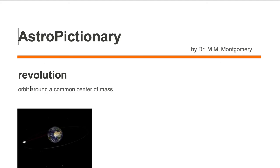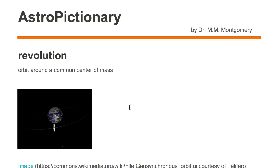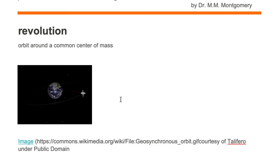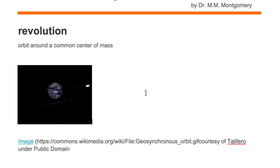Revolution is an orbit around a common center of mass. Here we're looking at a satellite which is in a geosynchronous orbit. You can see that this satellite is orbiting around the Earth. The center of mass of this geosynchronous satellite and the Earth system is in the center of the Earth. So it looks like the Earth is rotating on its axis and the satellite is orbiting around the Earth.